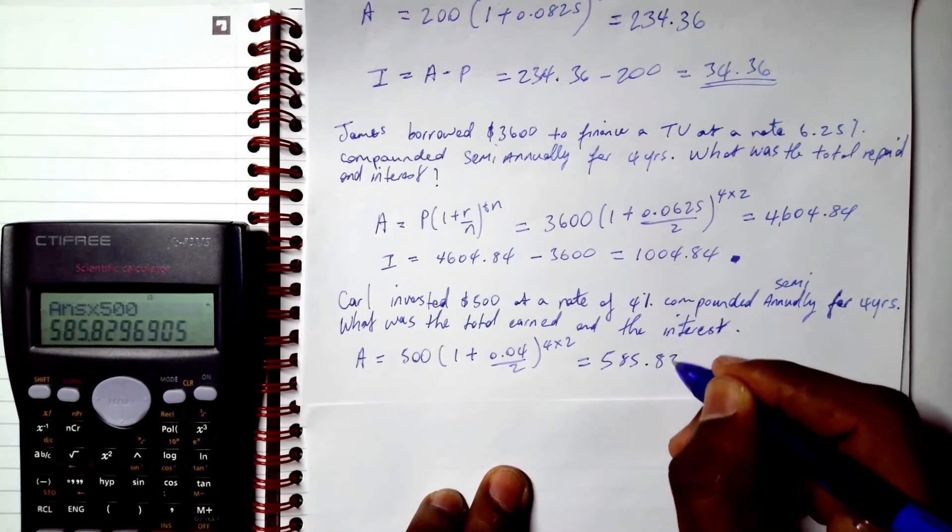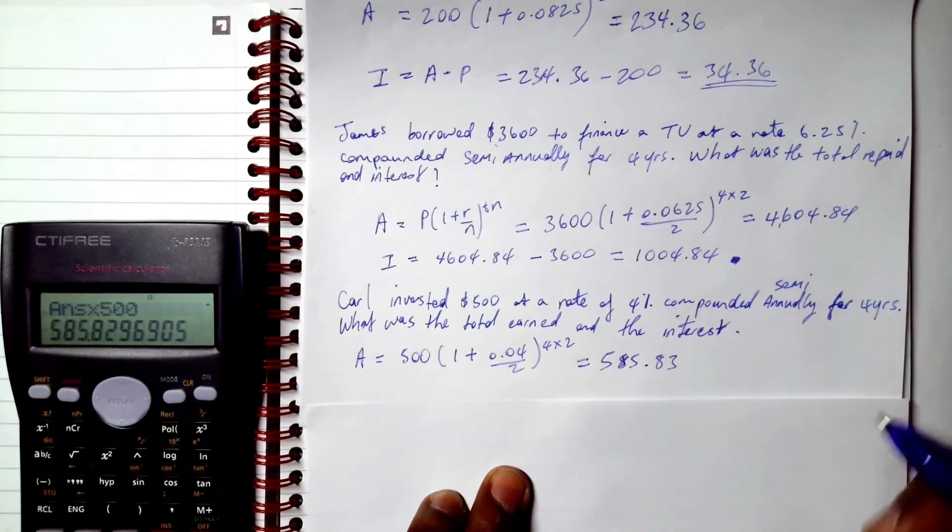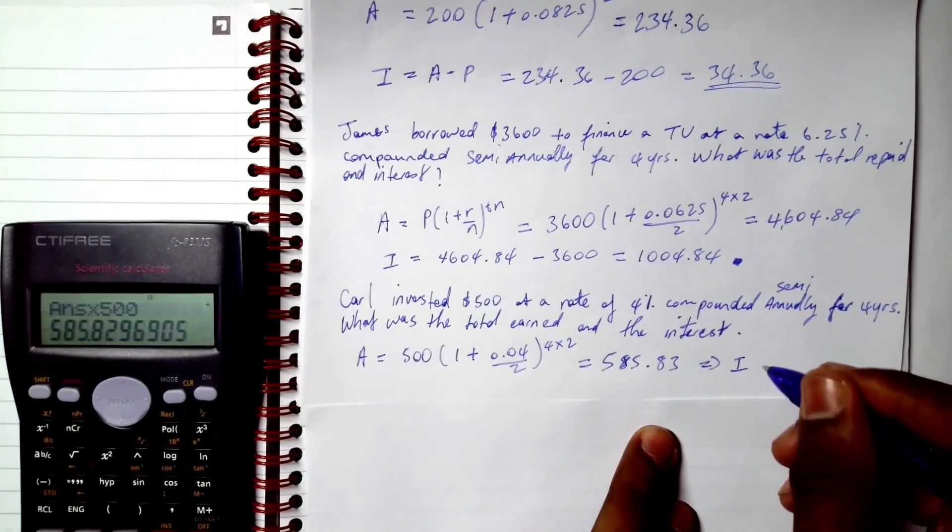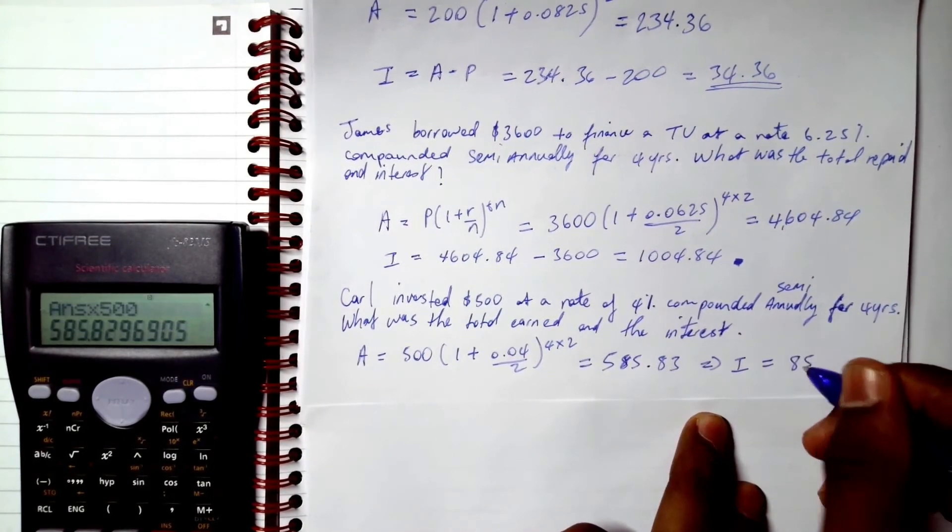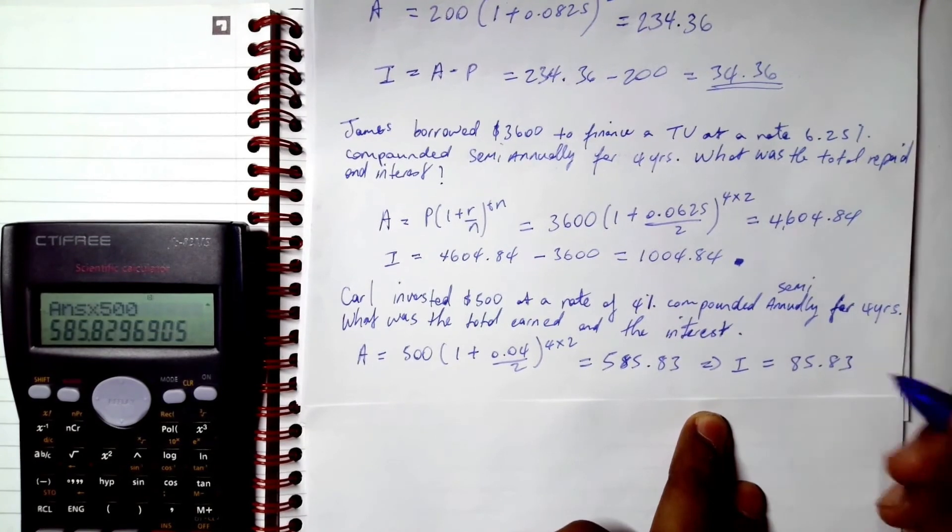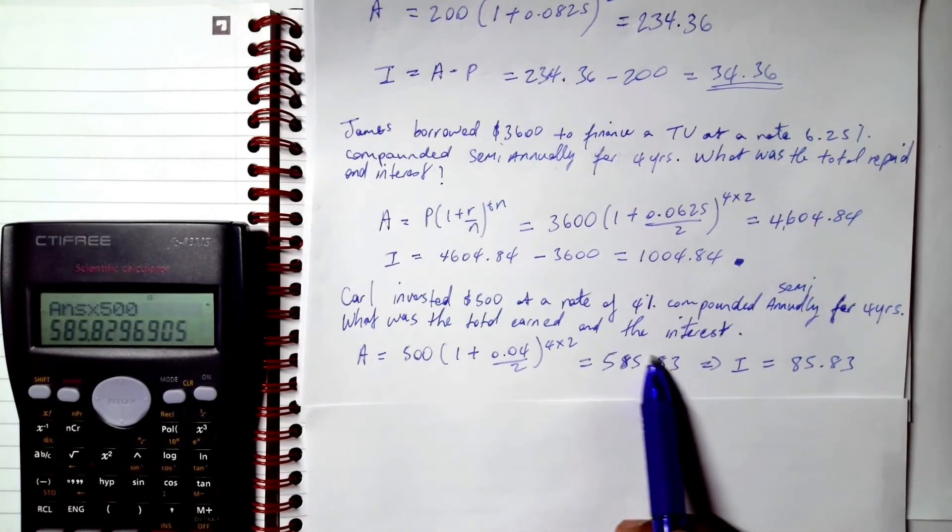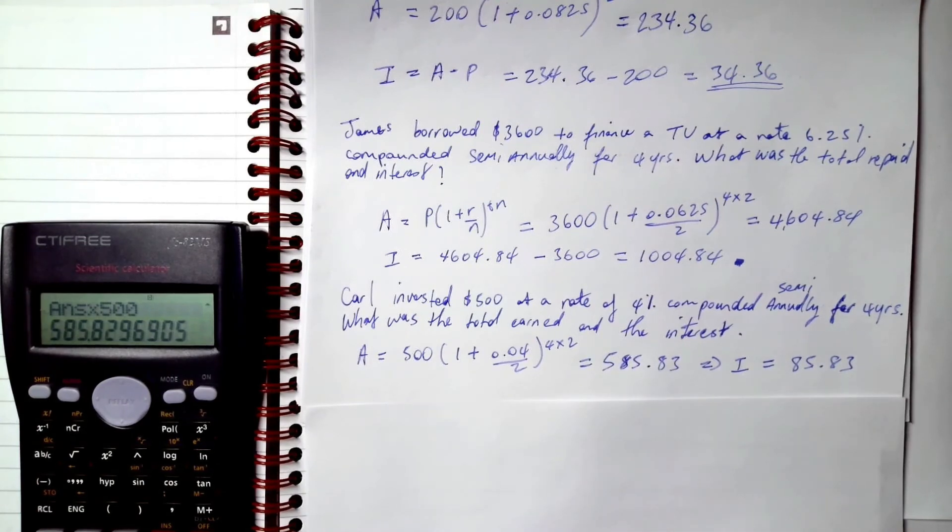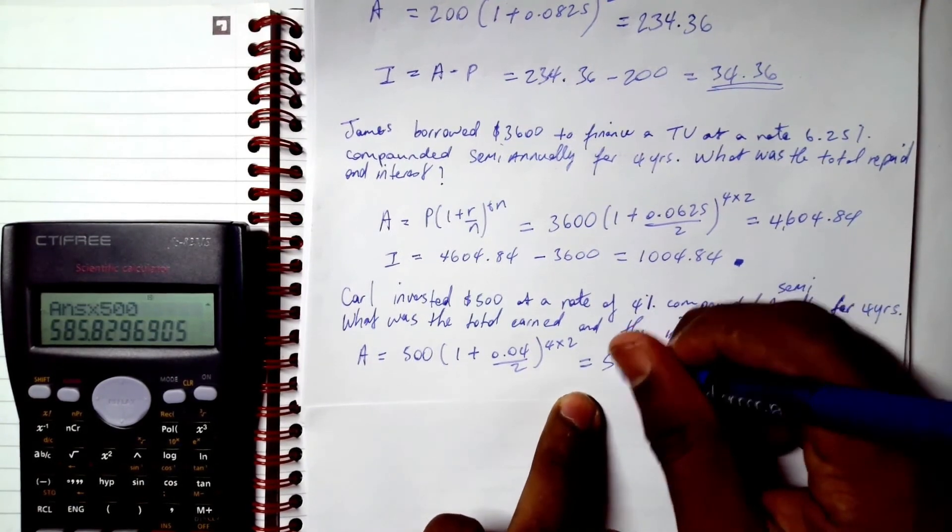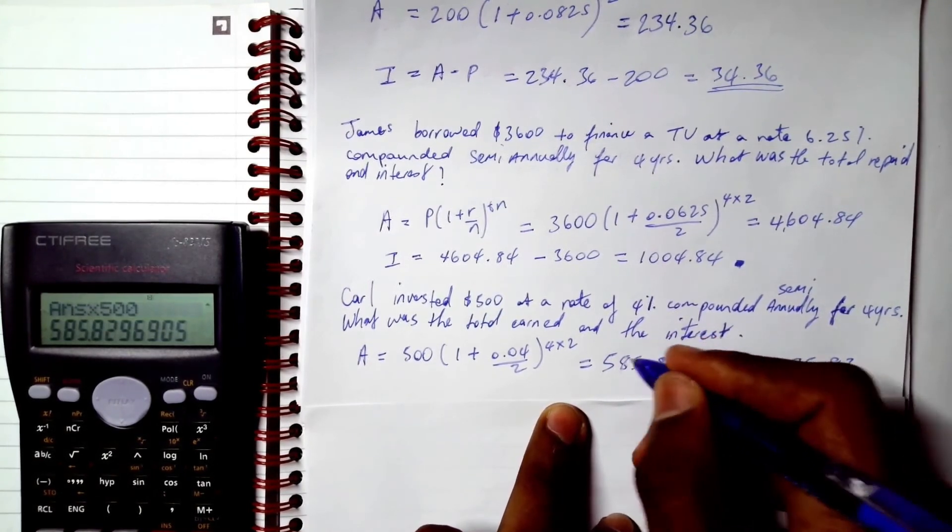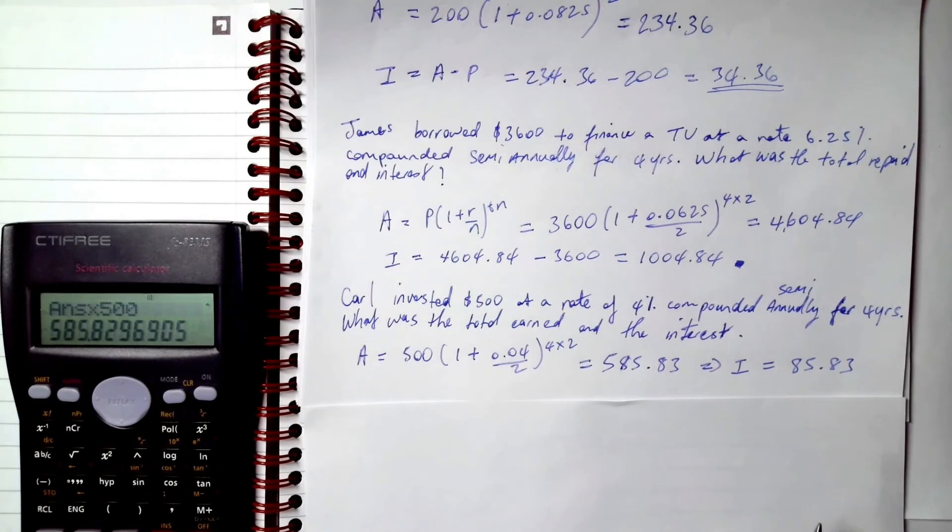This is going to be equal to 585.83, which implies that interest is equal to 85.83, because interest is this minus 500. Right, and this is an 8. Yeah, there it is.